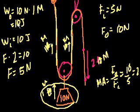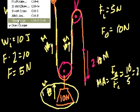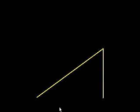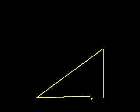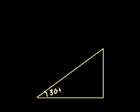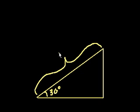Let's do another mechanical advantage problem — actually a really simple one we've been working with for a long time. Let's say I have a wedge. A wedge is actually considered a machine. It took me a while to get my mind around that, but a wedge is a machine because it gives you a mechanical advantage. If I have this wedge here with a 30-degree angle, and this distance up here is d, what is this other distance going to be?